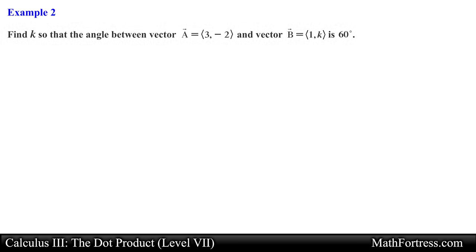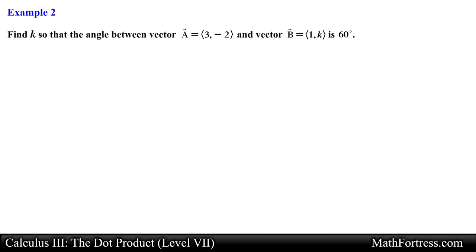Let's try the next example. Find k so that the angle between vector a and vector b is 60 degrees. This problem looks similar to the previous example, but we are not dealing with a unit vector and we only have one component as our unknown — in this case the y component k. Let's find the value of k that makes the angle between vector a and vector b equal to 60 degrees.